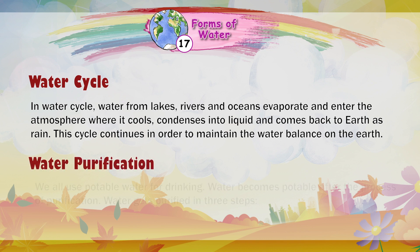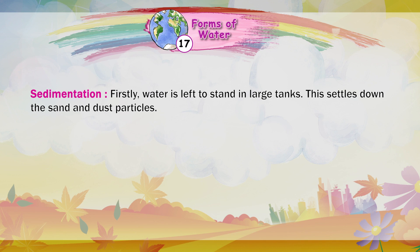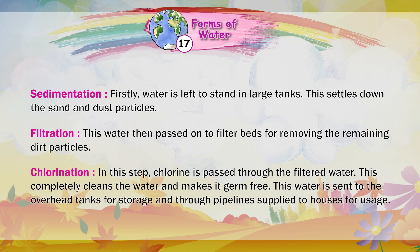Water Purification. We all use potable water for drinking. Water becomes potable after the process of purification, which happens in three steps. First, sedimentation: water is left to stand in large tanks, which settles down the sand and dust particles. Second, filtration: the water is passed on to filter beds to remove remaining dirt particles. Third, chlorination: chlorine is passed through the filtered water, which completely cleans the water and makes it germ-free. This water is then sent to overhead tanks for storage and supplied through pipelines to houses.